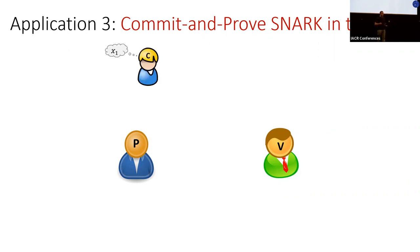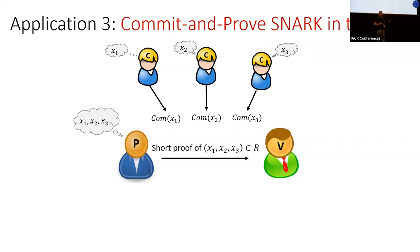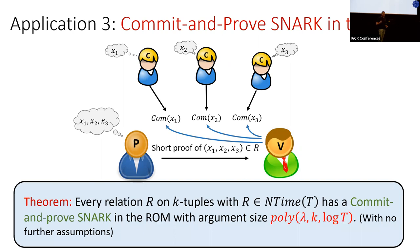Our last application is commit-and-prove SNARKs in the random oracle model — not a direct application of our main theorem but of tools we develop along the way. A committer has a value x₁ in mind and sends a short commitment; other committers do the same. A prover who knows the values under the commitments sends a short proof that they together belong to some relation. We show that every relation on k-tuples decidable in nondeterministic time t has a commit-and-prove SNARK in the random oracle model with argument size polynomial in the security parameter, the number of committers, and log t — using only the random oracle model.